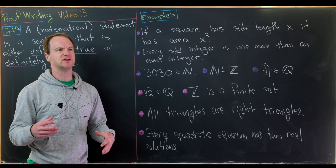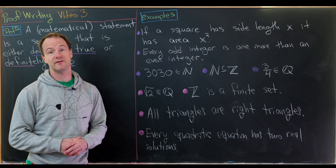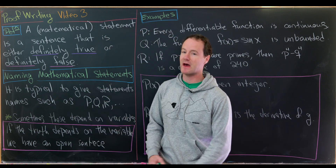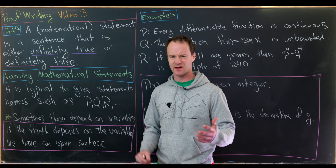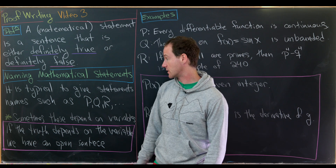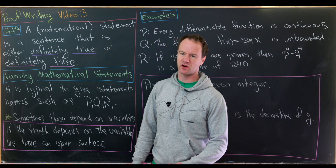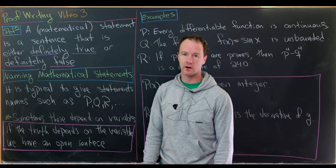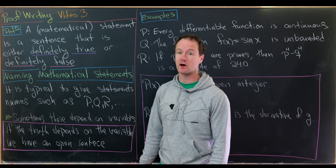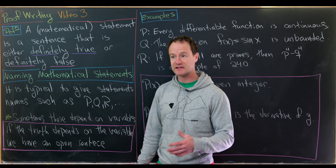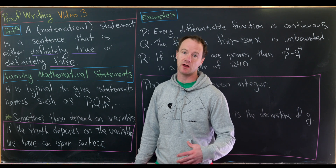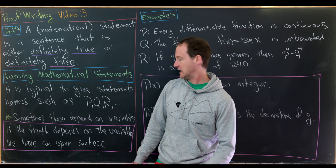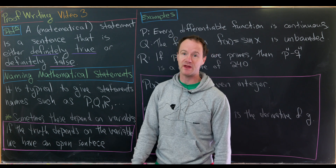Now let's look at the standard strategy of naming mathematical statements. It's fairly typical to name statements, which sets up a calculus of logic we'll see later. General names like p, q, and r are used. Furthermore, sometimes these statements depend on variables, and if the truth of a statement depends on the value of a variable, it's technically not a statement anymore — it's called an open sentence.